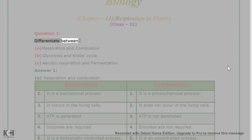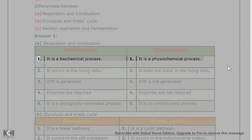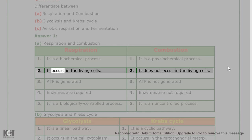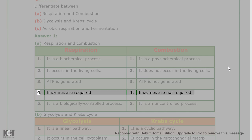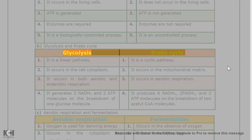Question 1: Differentiate between (a) respiration and combustion, (b) glycolysis and Krebs cycle, (c) aerobic respiration and fermentation. Answer 1(a): Respiration vs Combustion. Respiration is a biochemical process; combustion is a physicochemical process. Respiration occurs in living cells; combustion does not. ATP is generated in respiration but not in combustion. Enzymes are required for respiration but not for combustion. Respiration is a biologically controlled process; combustion is an uncontrolled process.